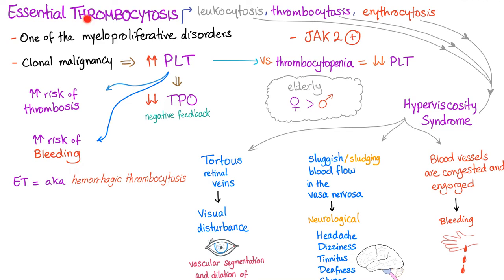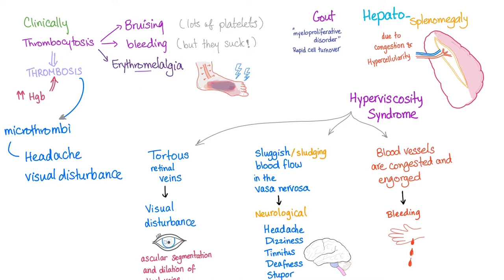Essential thrombocytosis is a disease of the elderly, and interestingly it's more common in women than men — unlike polycythemia vera where men and women are roughly equal — and we don't know why. There is hyperviscosity syndrome leading to visual disturbance, neurological problems, and bleeding. Clinically, lots of thrombocytes lead to bruising, bleeding, erythromelalgia, and thrombosis including microthrombi causing headache and visual disturbance. Gout is possible. Hepatosplenomegaly is possible but rare in essential thrombocytosis, unlike polycythemia vera.